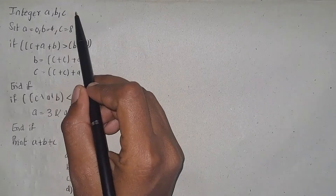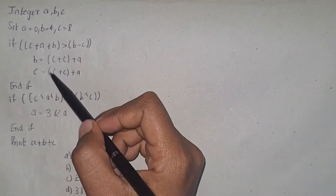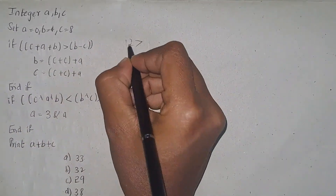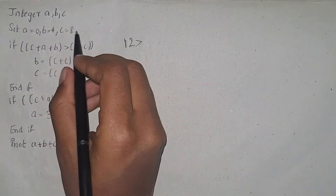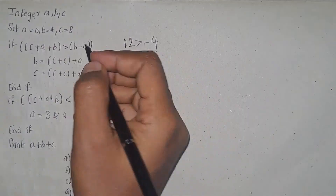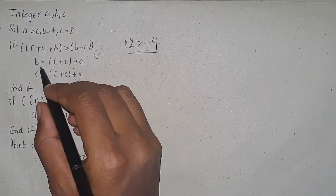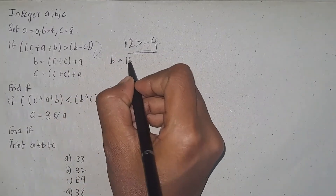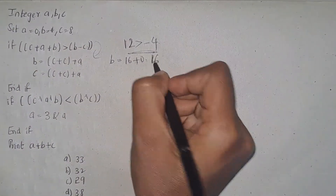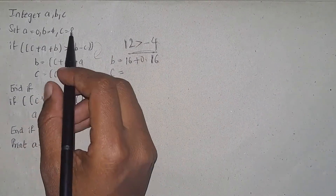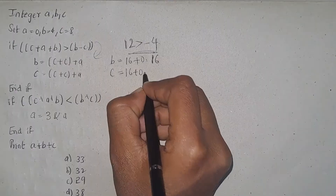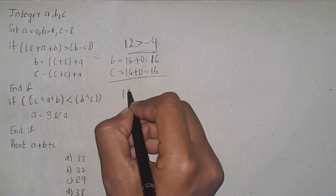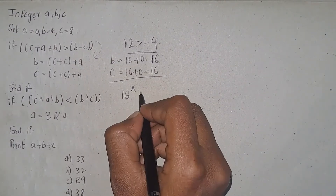In this pseudo code they have given variables a, b, c with assigned values. Perform the operation: c plus a plus b equals 12. Is 12 greater than b minus c, which is 4 minus 8 equals minus 4? Yes, this is true, so you will go into the if condition. Now b becomes c plus c, that is 8 plus 8 equals 16, plus 0 equals 16. c becomes 8 plus 8 equals 16. Now perform the inner if condition: c XOR c is 0.